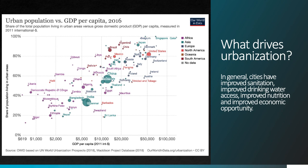As shown in this figure, there is a strong correlation between the percentage of people living in urban areas and per capita gross domestic product, which measures the total national economy normalized to the total population. You could hypothesize that urbanization drives economic development, or that economic development leads to urbanization — and there are debates about this in the economic and development literature. It's also worth noting that in general, cities have improved sanitation, drinking water access, nutrition, and economic opportunity compared to rural areas, which draws people in for a variety of reasons.